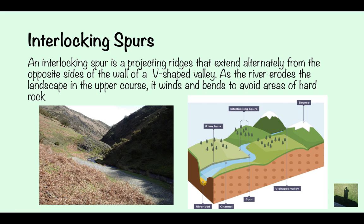Interlocking spurs. An interlocking spur is a projecting ridge that extends alternately from the opposite sides of the wall of a valley. As the river erodes the landscape in the upper course, it winds and bends to avoid areas of hard rock. As you can see here, the river is coming down and these formations — what look like mountains, which are part of the valley — are the interlocking spurs. The river has to weave around them because they're areas of hard rock, and you can see this again in the diagram here.